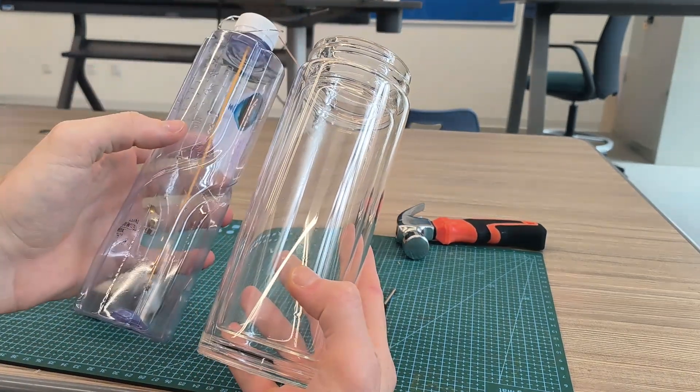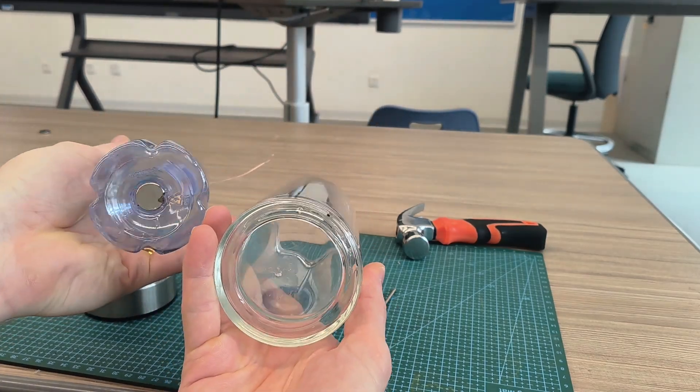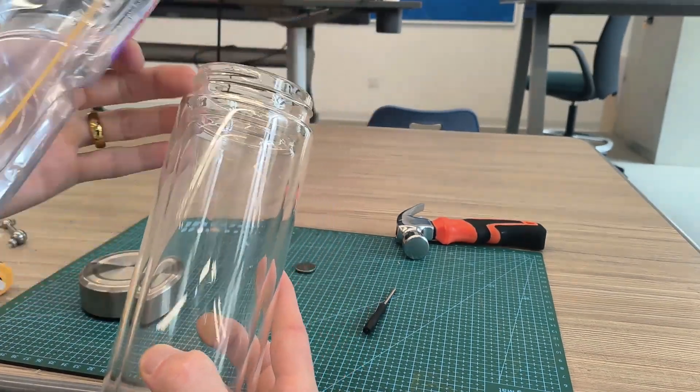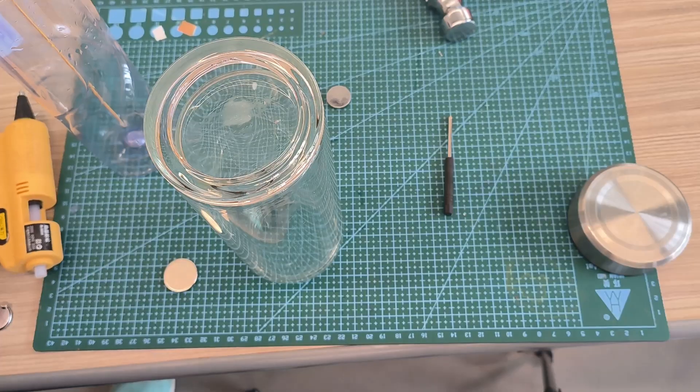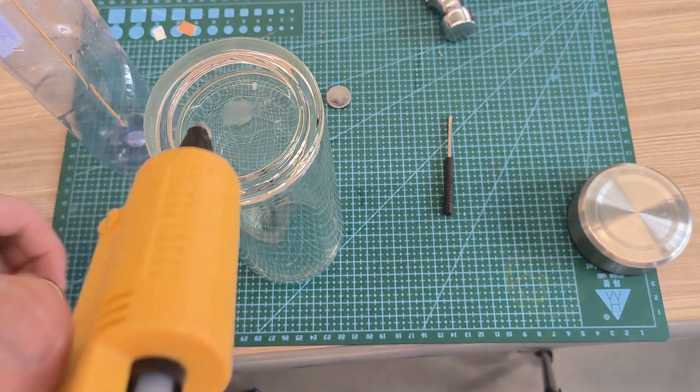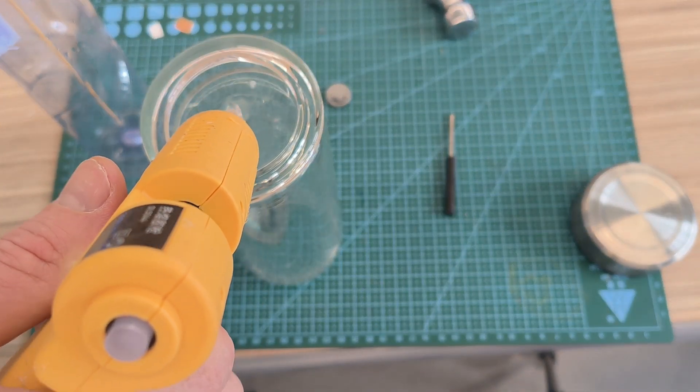Previously I made one in a plastic bottle but I find that glass bottles just look nicer and have a nice shine so I'm going to be using that. The first thing is to glue on a magnet at the bottom of your container.